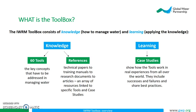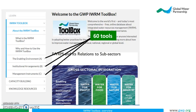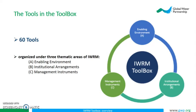Let's briefly look at the 60 tools that make up the Toolbox. The tools are organized under three thematic areas of IWRM: the enabling environment, the institutional arrangements, and the management instruments.